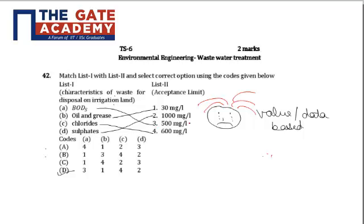For BOD5, this limit is 500 mg per liter. For oil and grease, 30 mg per liter. For chlorides, the limit to be disposed on irrigation land is 600 mg per liter.